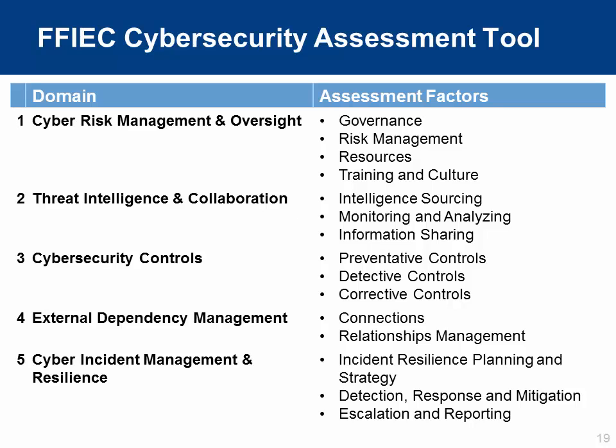Domain one, cyber risk management and oversight, has assessment factors of governance, risk management, resources, and training and culture. Domain two, threat intelligence collaboration, includes intelligence sourcing, monitoring and analyzing, and information sharing. Domain three, cybersecurity controls, has preventative, detective, and corrective controls. Domain four, external dependency management, covers connections and relationship management. Domain five, cyber incident management and resilience, includes incident resilience planning and strategy, detection response and mitigation, and escalation and reporting.